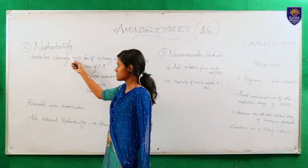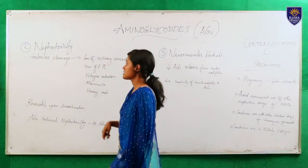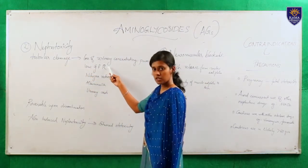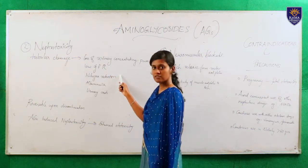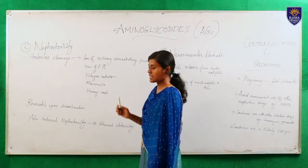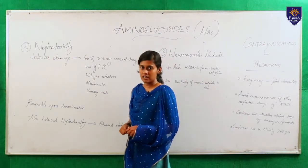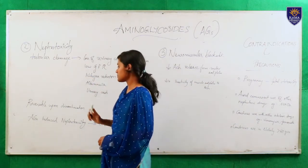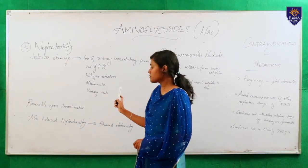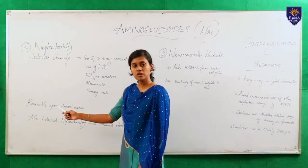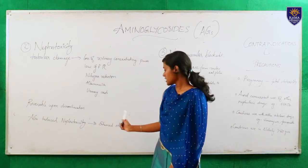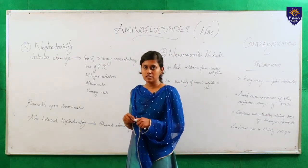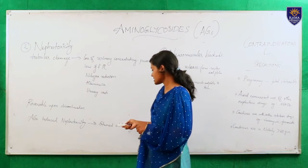Next is nephrotoxicity. This drug may also cause nephrotoxic effects. Tubular damage may lead to loss of urinary concentration power, low glomerular filtration rate, nitrogen retention, albuminuria and urinary casts. This is based on the dose of the drug and duration of treatment. Nephrotoxicity may be reversible upon discontinuation. Importantly, aminoglycoside-induced nephrotoxicity may lead to enhanced ototoxicity, because when there is nephrotoxicity the plasma concentration of the drug increases, which leads to ototoxicity.